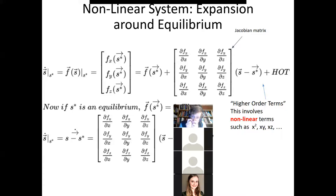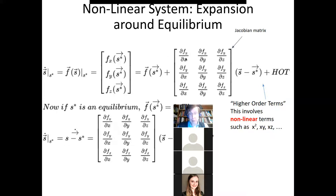The first row of the Jacobian is saying: how does the value of this quantity vary with each of the state variables? The next row down is: how does this one vary with each of the state variables? And then we have some higher order terms. I'm going to make this more concrete with a case of X, Y, Z.